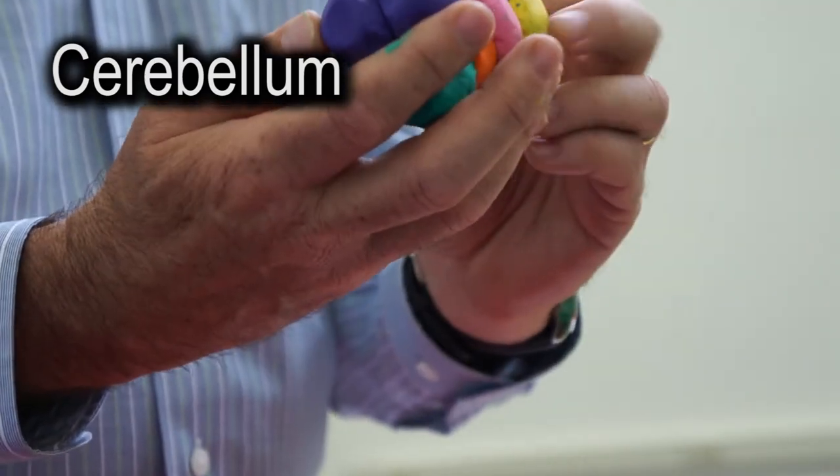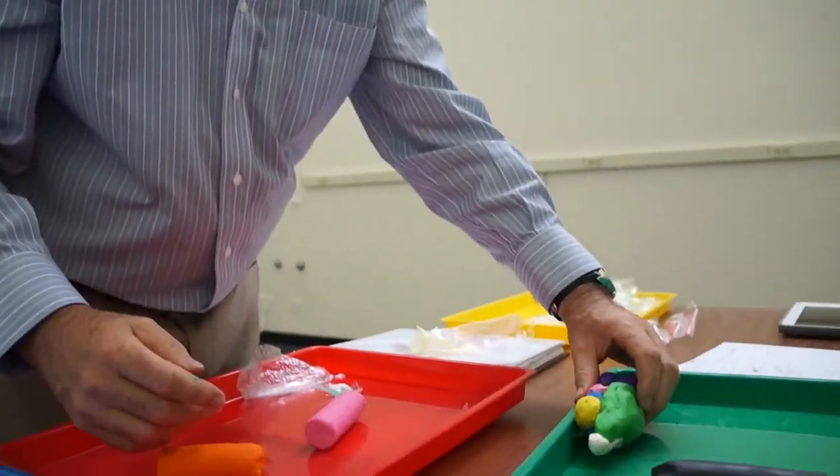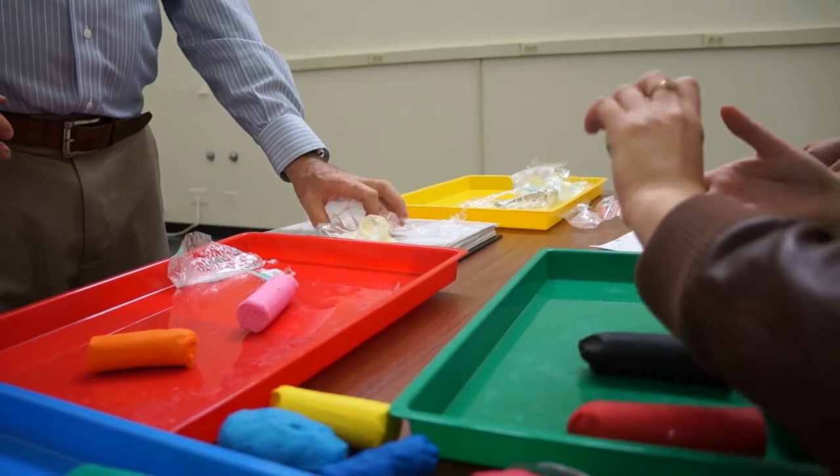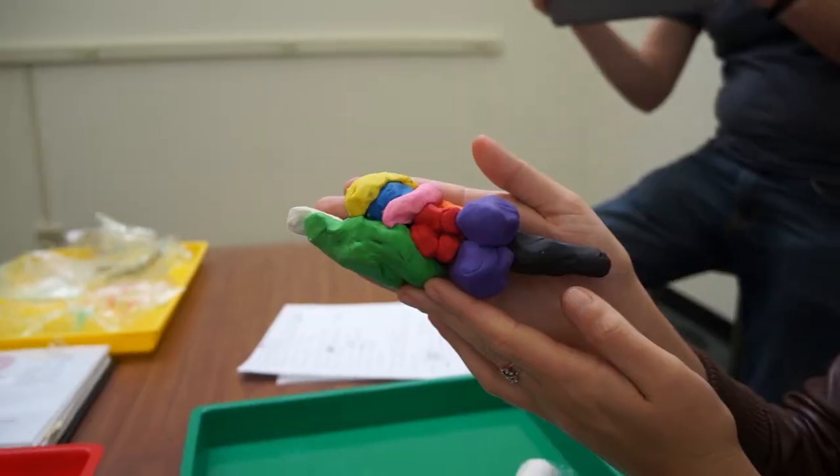So the pons is in green at the base of the midbrain. That actually does look like a rodent brain. It looks pretty good. Our best model so far.